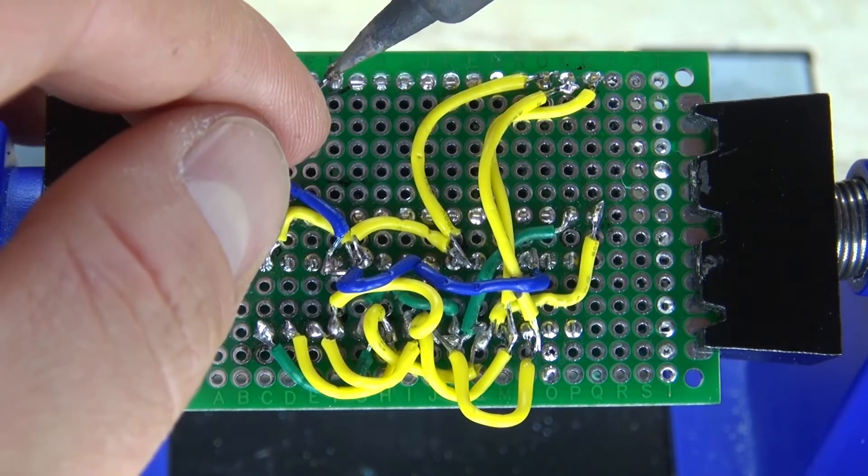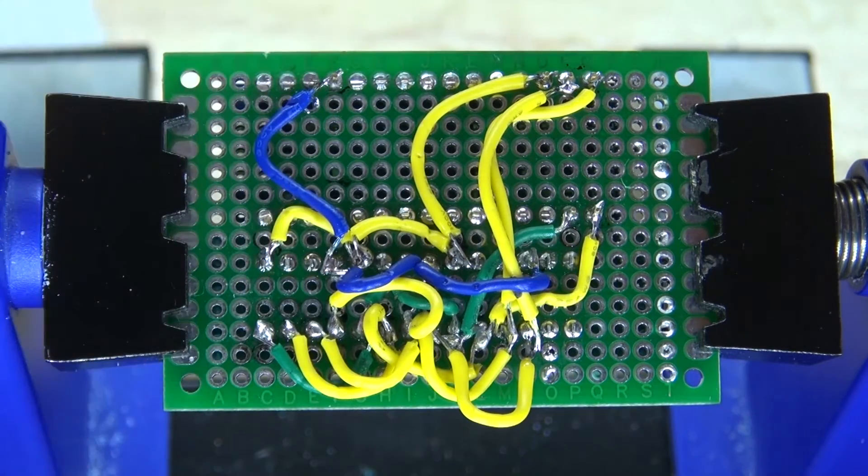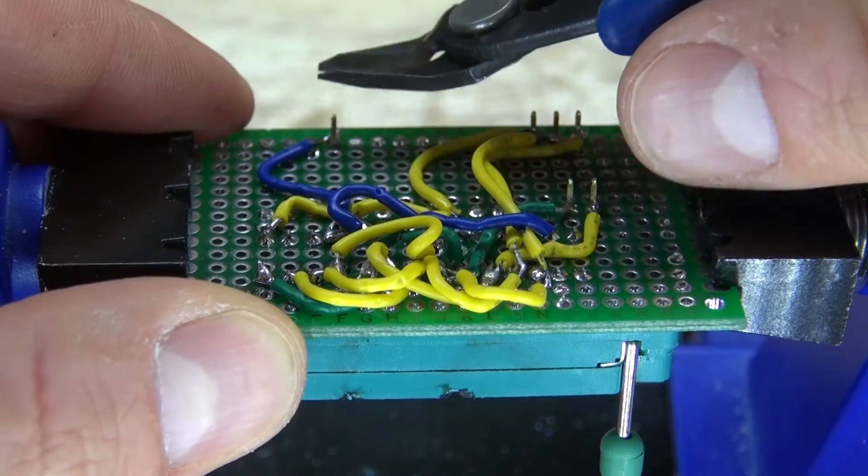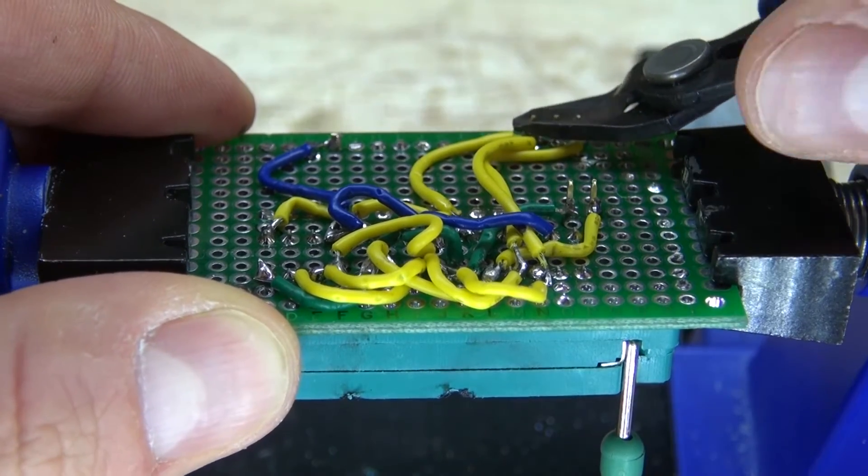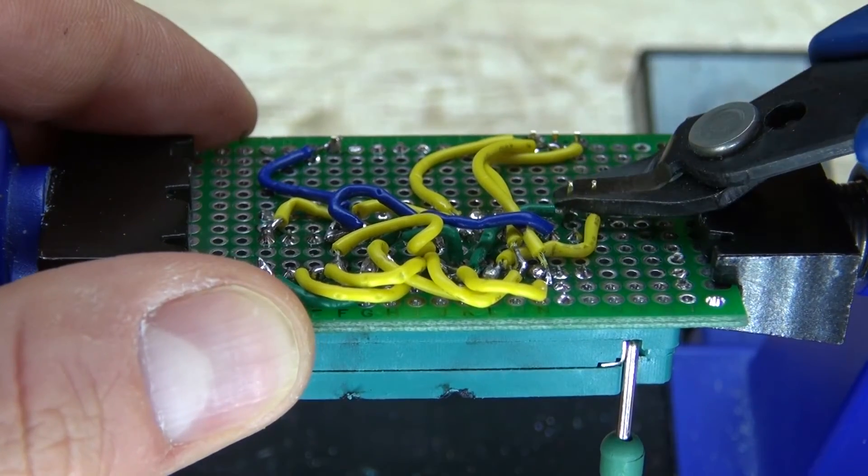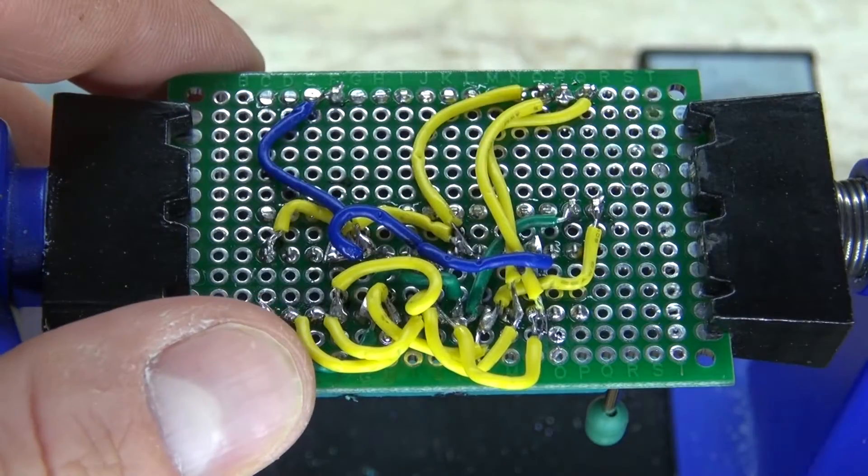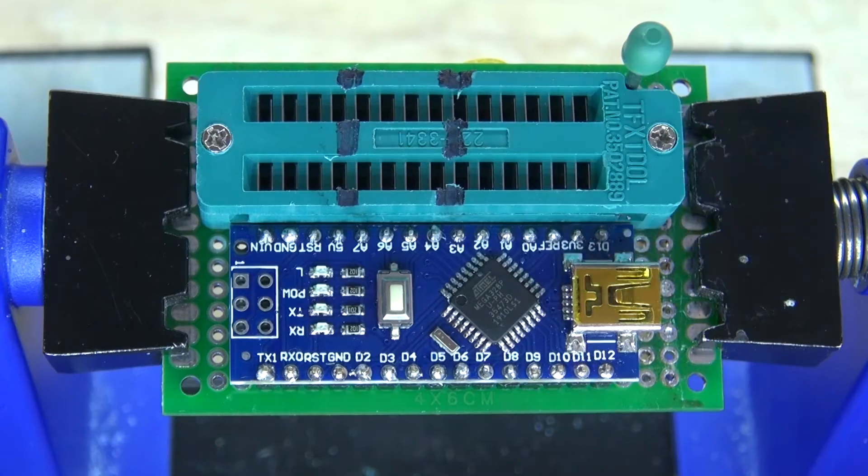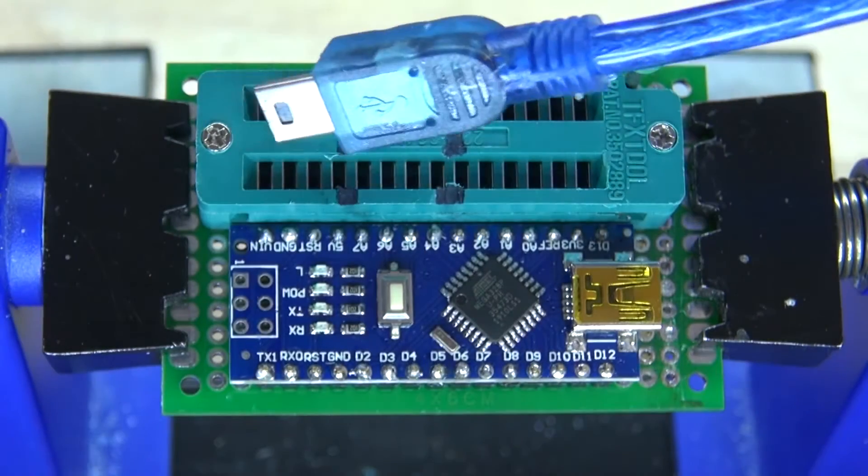And there we go. Pin 4 is now grounded. Next, what I need to do is cut off the excess header pins, just to make the circuit a little bit cleaner. And now I'm ready to program the Arduino Nano to be able to program the ATtinies in the future.